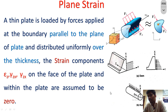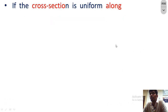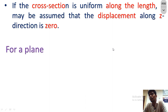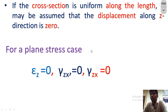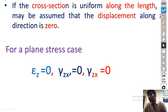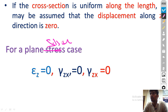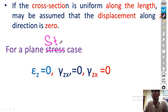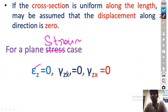Every condition has different examples. If the cross-section is uniform along the length, the displacement along the z direction may be assumed to be 0. For plane strain, the strain along z is 0, strain along the z-x plane is 0, and strain along the z-y plane is 0.